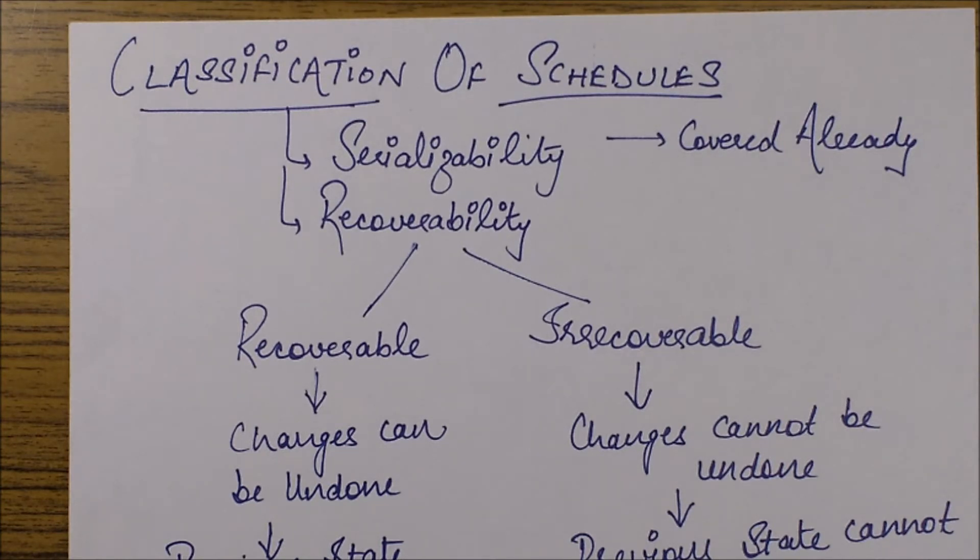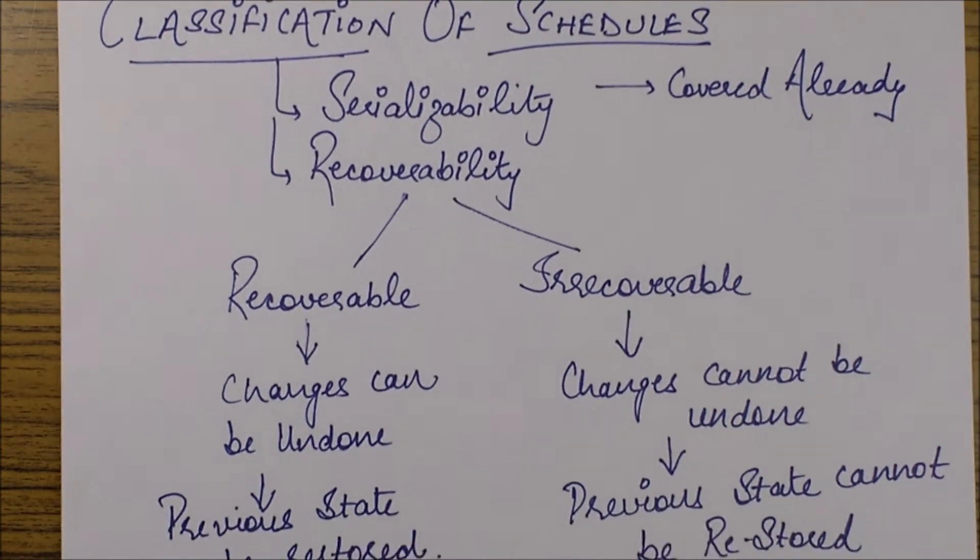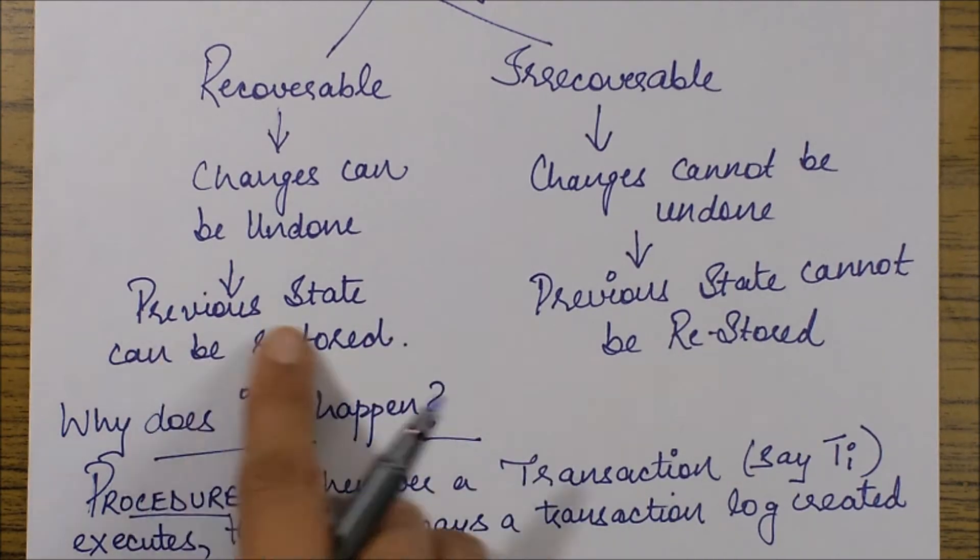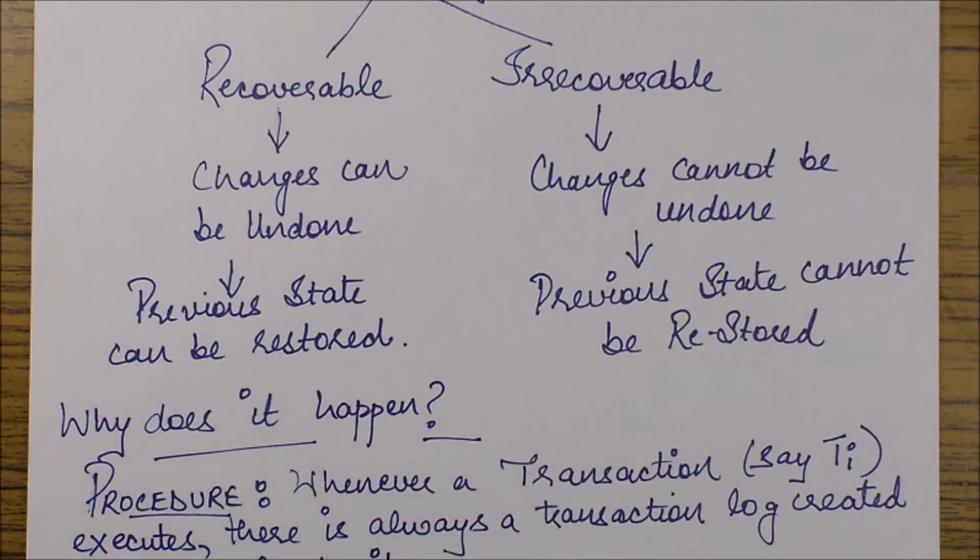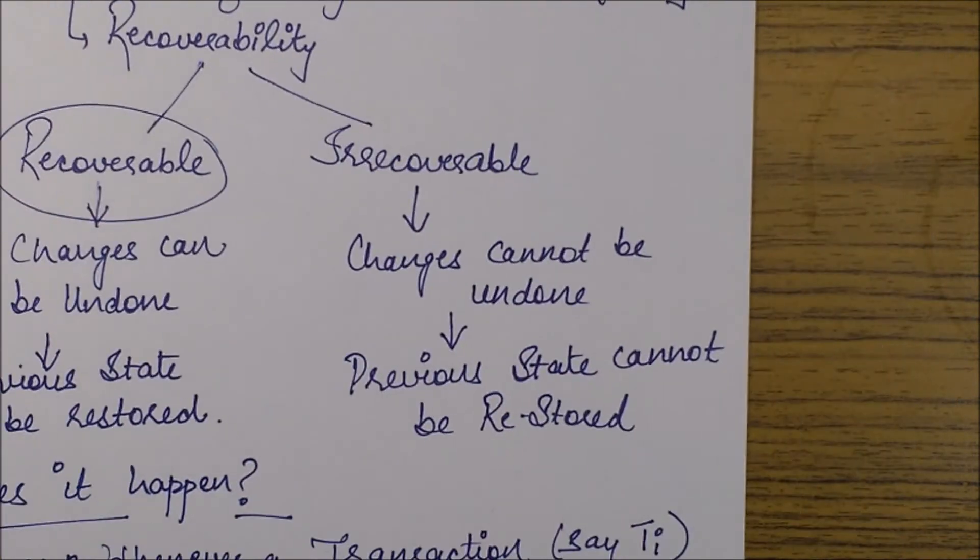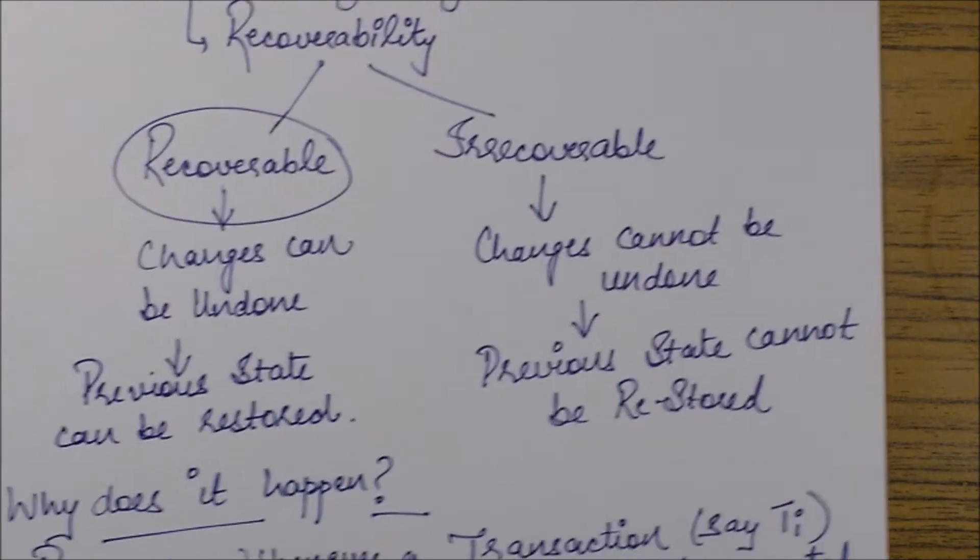Let's see how we can classify various schedules on the basis of the concept called recoverability. First of all, what is a recoverable schedule or what is an irrecoverable schedule? A recoverable schedule is basically one in which I am able to undo my changes. An irrecoverable one is in which I am not able to undo my changes. So I would say a recoverable schedule allows you to undo your changes in which you can restore your previous state. And if I am not allowed or I am not able to recover my previous state, I would say the schedule was irrecoverable.